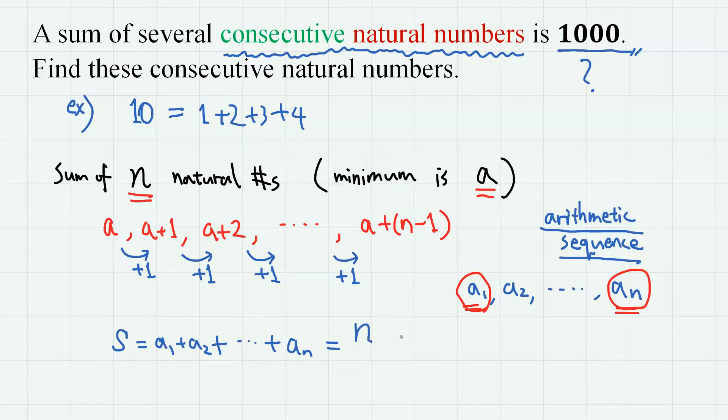It is n, the number of terms, times a1, the first term, plus an, the last term, over 2. In our case, the first term is a, and the nth term is a plus n minus 1.